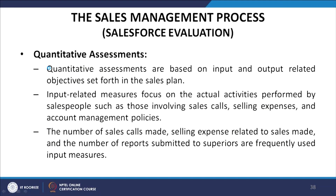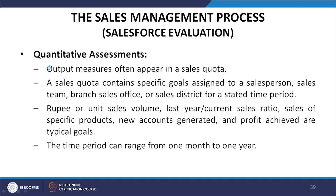Quantitative assessments are based on input and output-related objectives set forth in the sales plan. Input-related measures focus on the actual activities performed by salespeople, such as those involving sales calls, selling expenses, and account management policies. The number of sales calls made, selling expenses related to sales made, and number of reports submitted to superiors are frequently used input measures. Output measures often appear in a sales quota — specific goals assigned to a salesperson, sales team, branch sales office, or sales district for a stated time period. Rupee or unit sales volume, last year-to-current sales ratio, sales of specific products, new accounts generated, and profits achieved are typical goals, with time periods ranging from one month to one year.